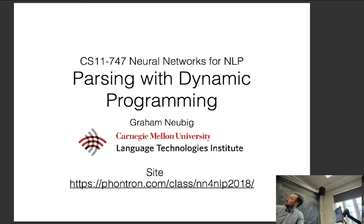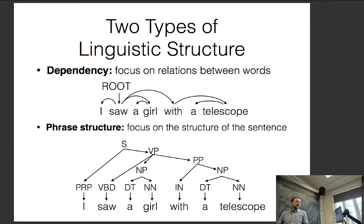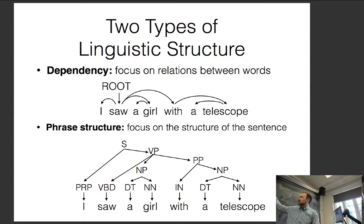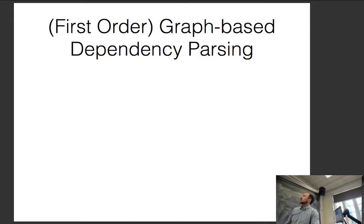We have two types of linguistic structure: dependency structure and phrase structure. The reading focused on dynamic programming algorithms for dependency structure. I'm also going to talk about neural methods for phrase structure. The reason the reading wasn't about that is because everyone has done the CKY algorithm in algorithms for NLP. So it builds heavily on that, but I assume most people already have an idea of it.